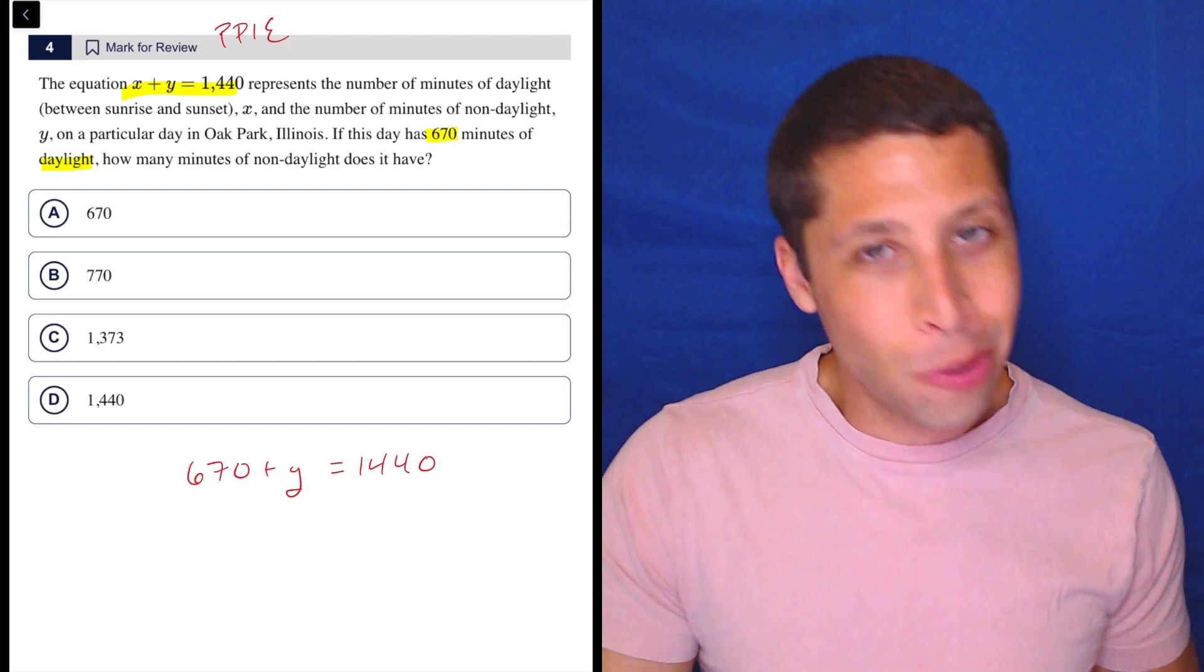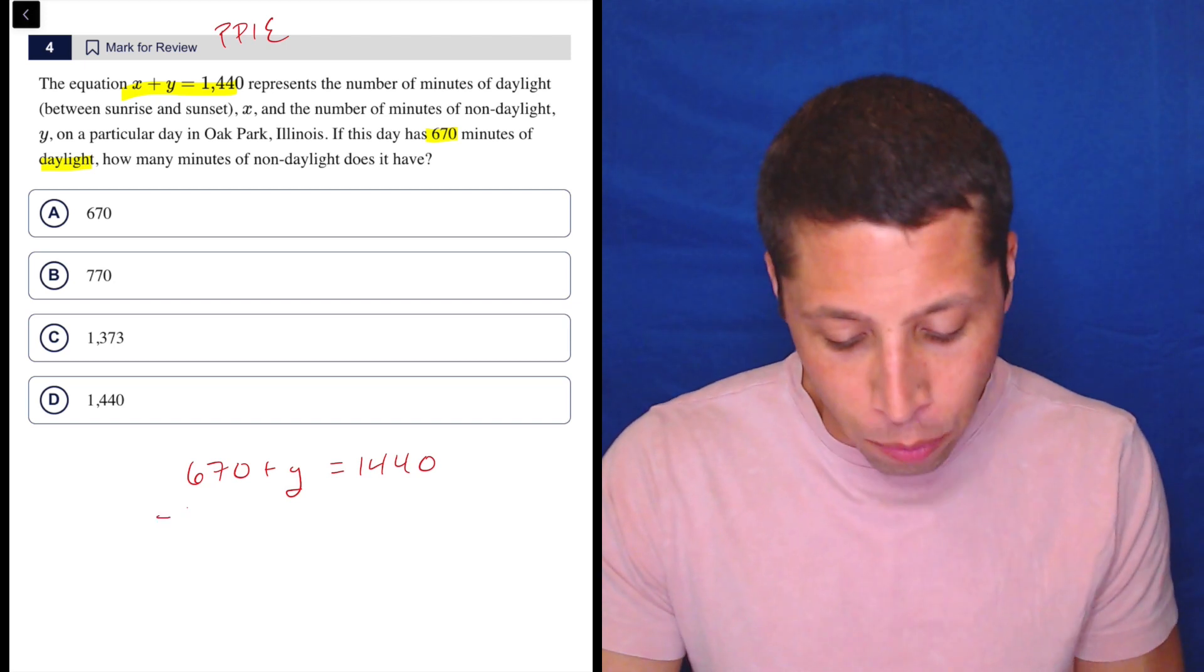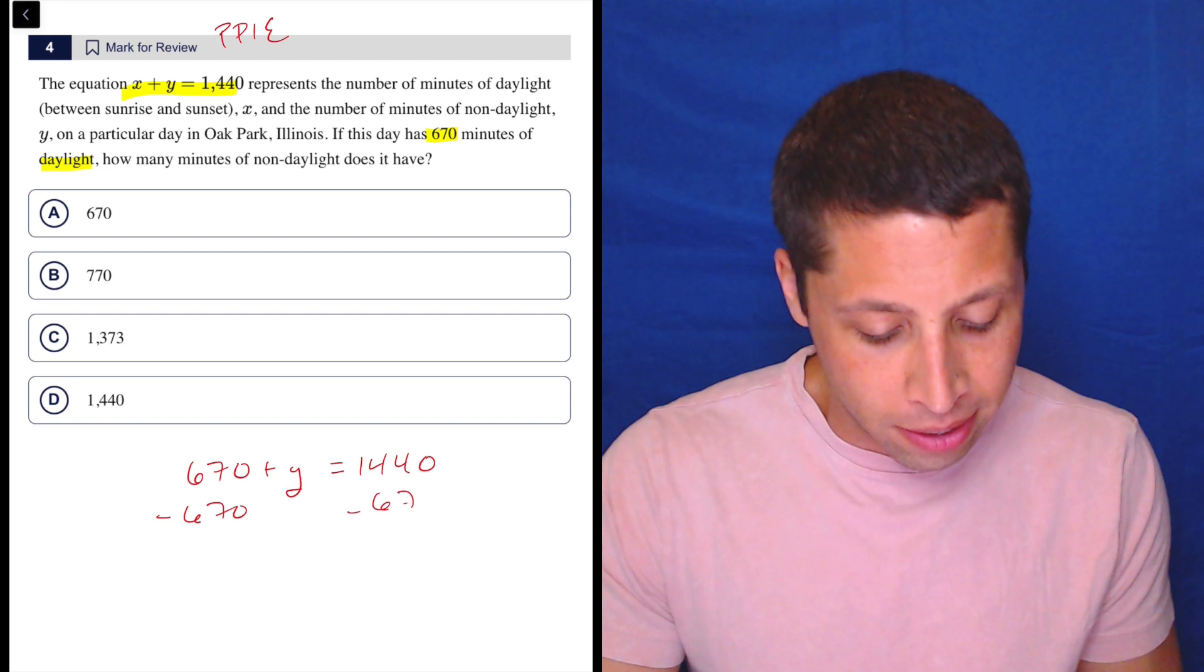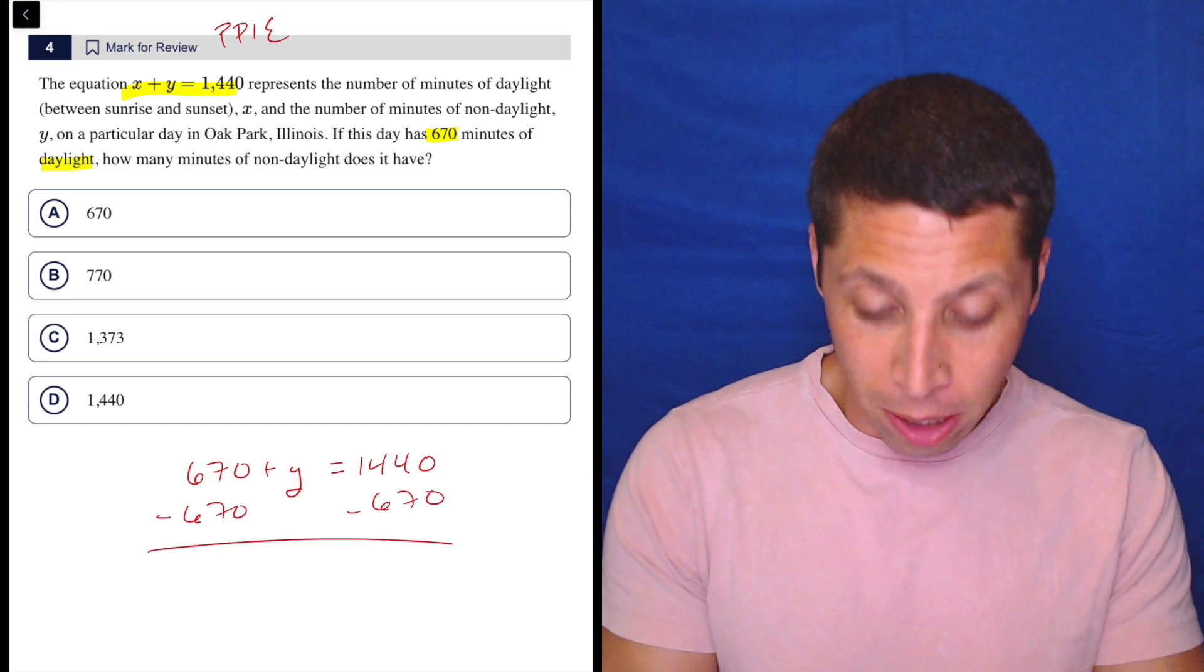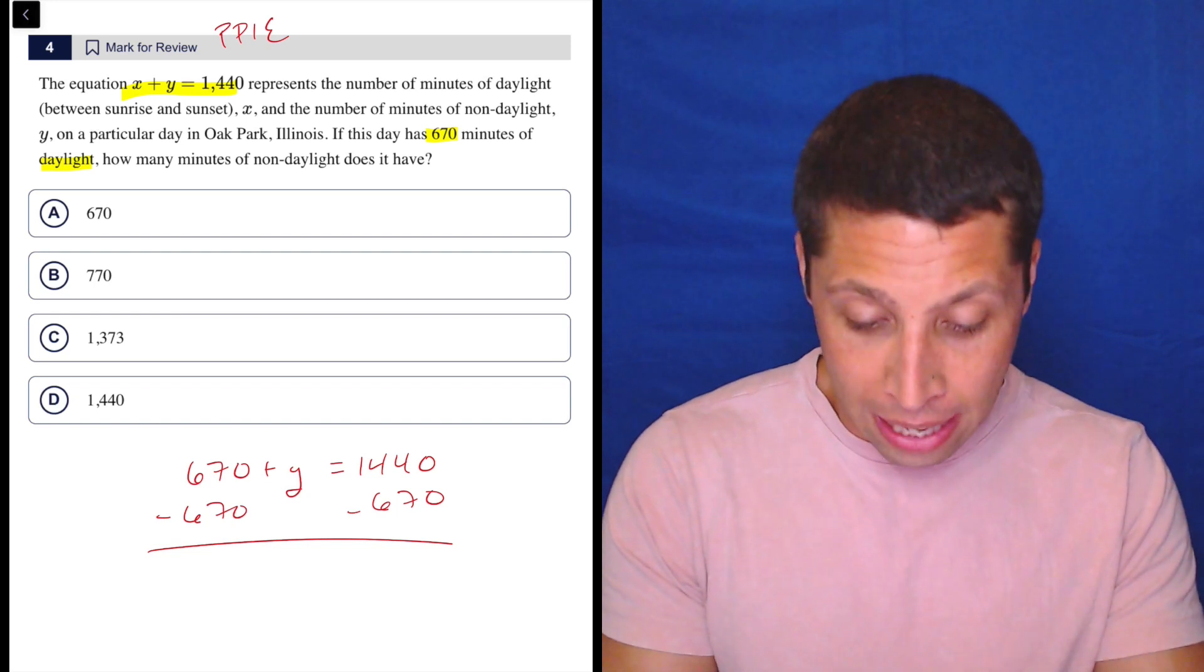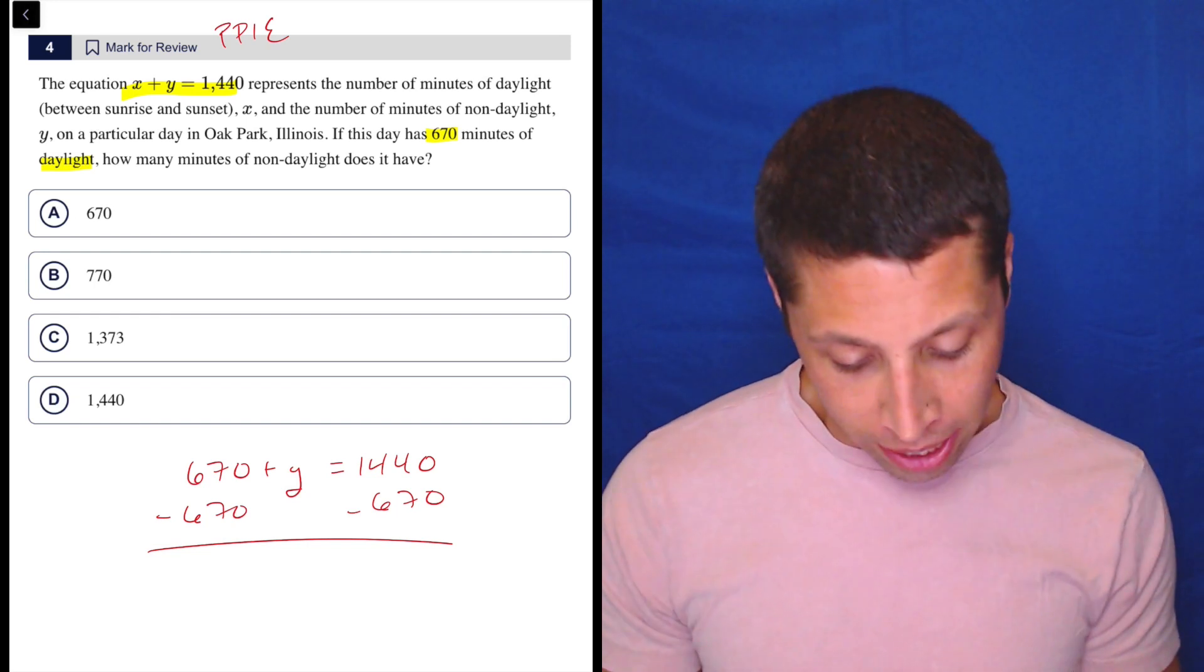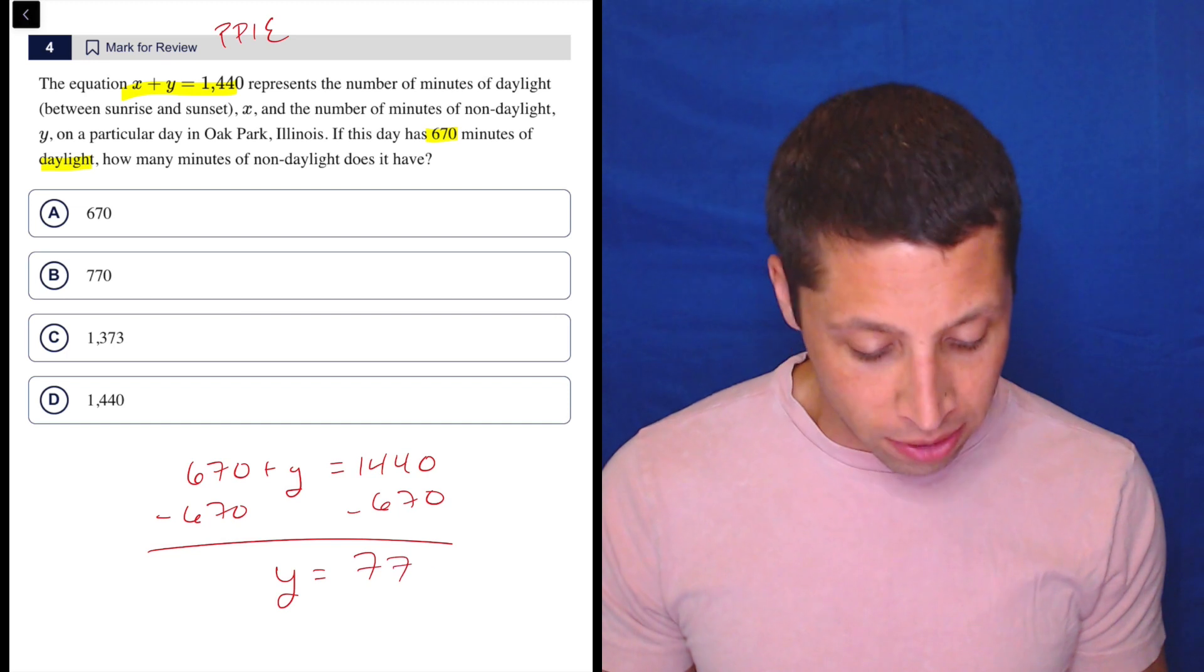You could obviously use Desmos to help you solve this, but gosh, why would you? Just subtract 670, and yeah, I would actually do it this way. I would do it on the page and just use my calculator because I'm afraid of maybe messing up. So minus 670, we get Y is equal to 770.